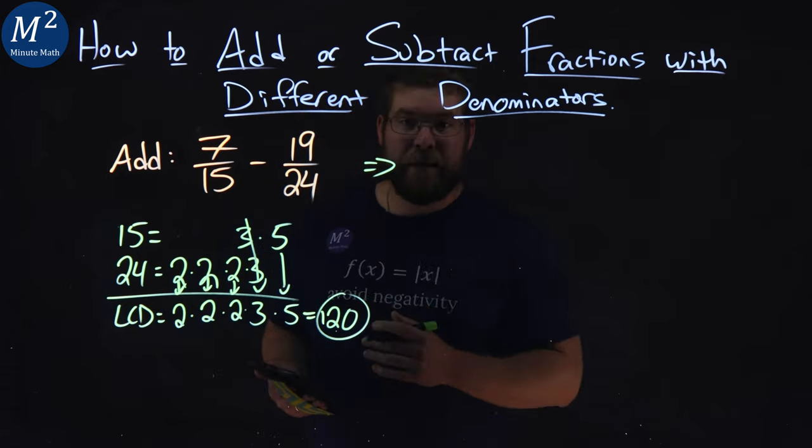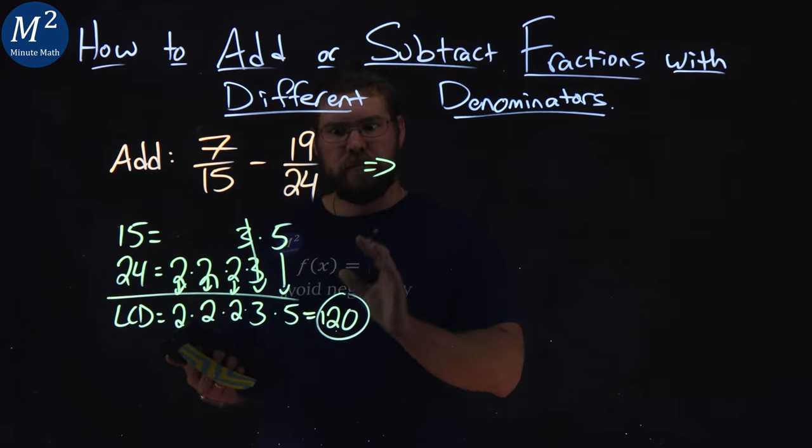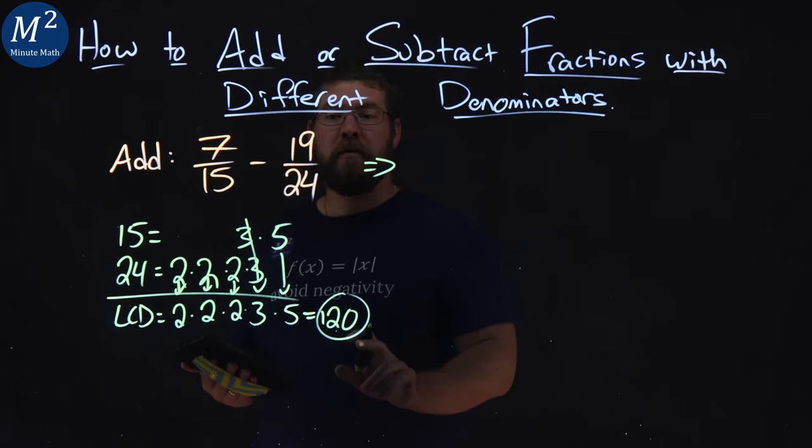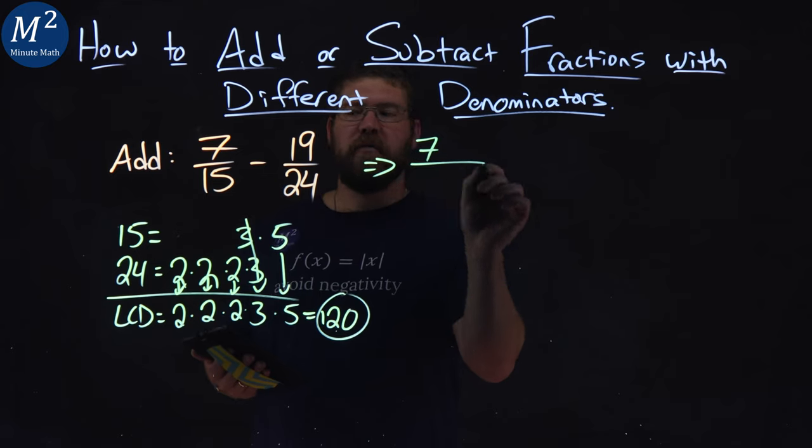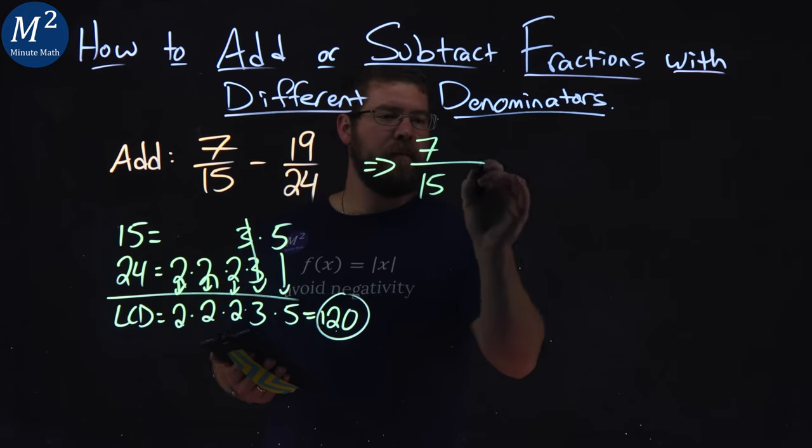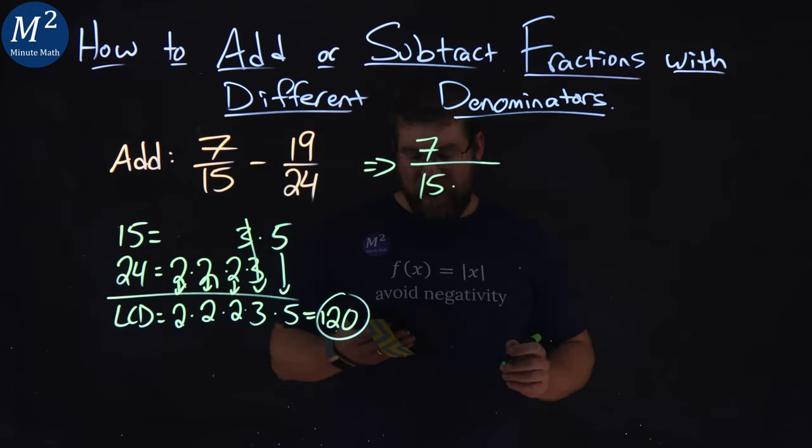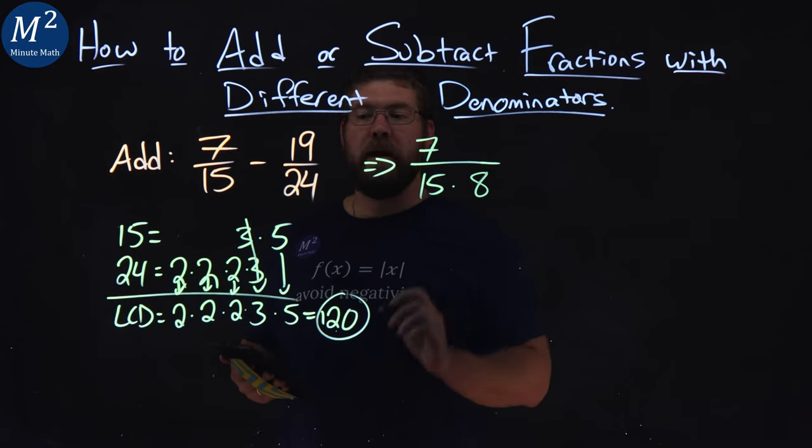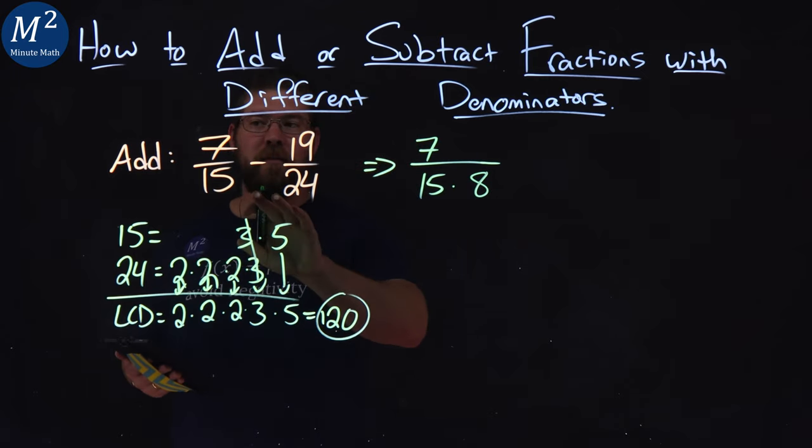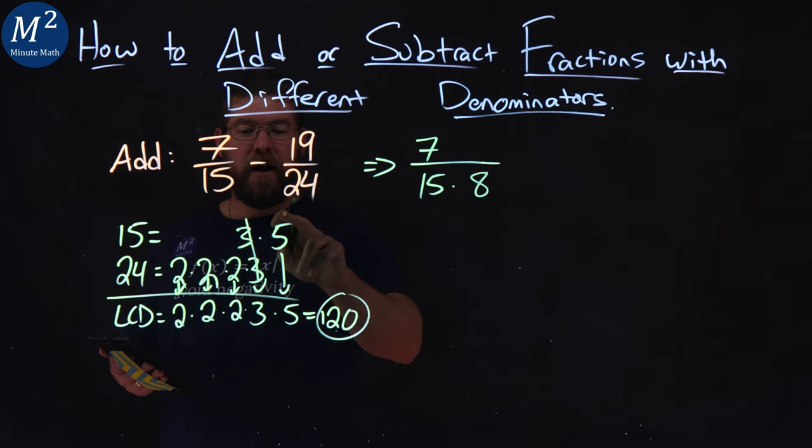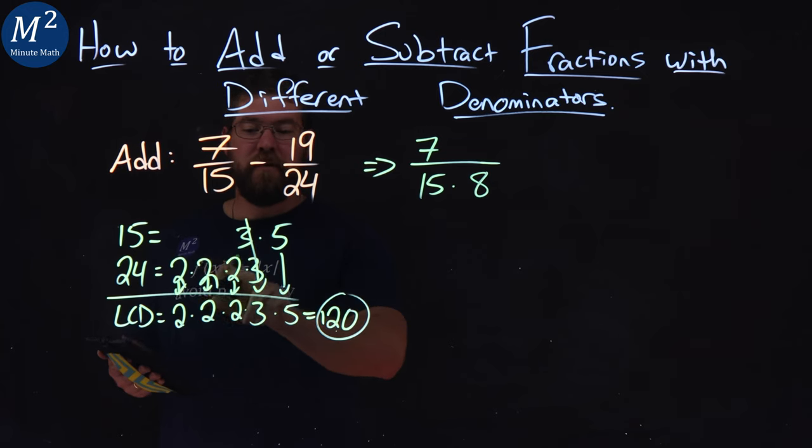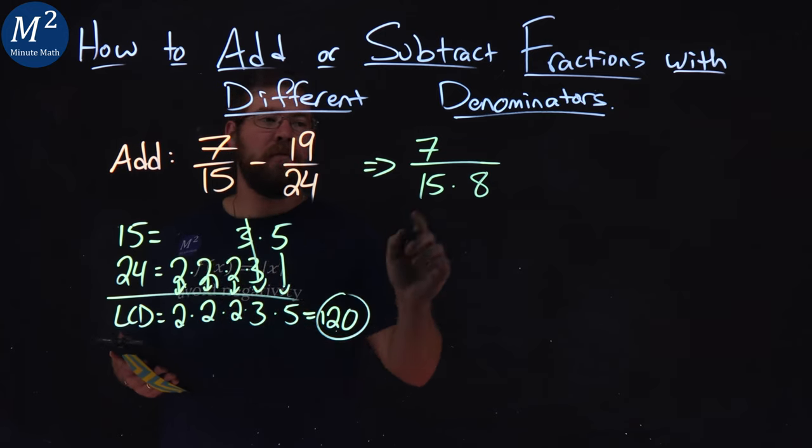We want to rewrite each one of these fractions so they have a common denominator of 120. So 7 over 15, 15 times 8 gets me that 120, but you can look at what else wasn't part of the factors. 3 and 5 were brought down, but it's missing the 2s. 2 times 2 is 4, times 2 is 8.